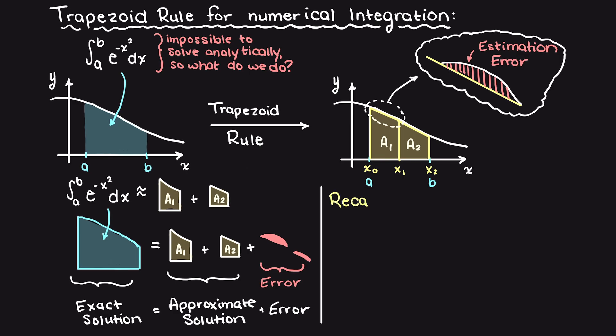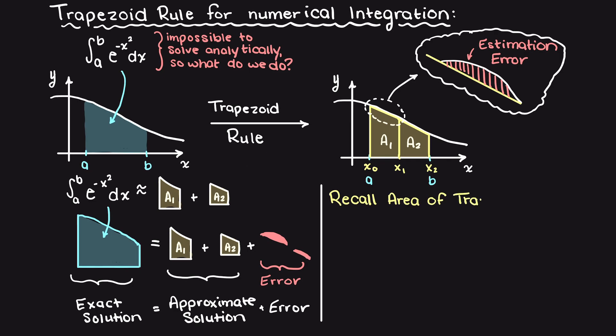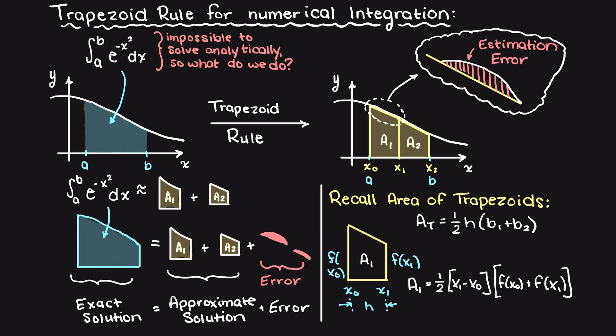Now, let's look at our trapezoids here, and remember how to find the area of a trapezoid. The area of each trapezoid is going to be ½ times our width, which is just delta x, or x1 minus x0, for our A1 here, times the left height of our trapezoid plus the right height of our trapezoid, and I hope this drawing here makes that more clear.